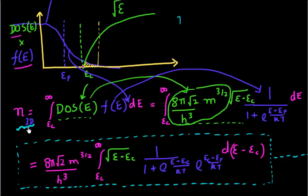We had together worked out that this carrier density can be represented by this integral — this horrible looking integral. What I want to do in this video is to simplify this integral and derive a closed-form expression. To do that, we might have to use some indefinite integrals involving exponential functions.